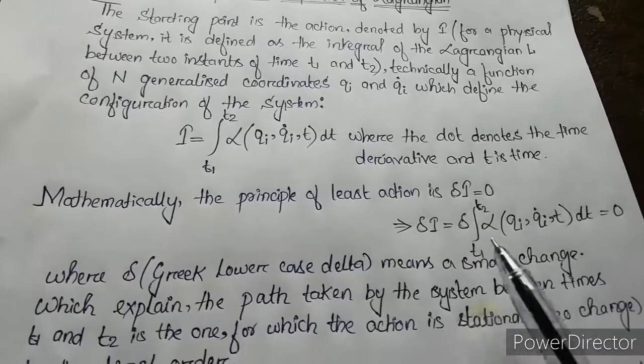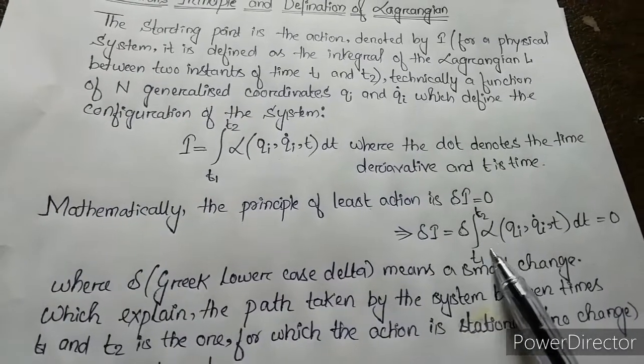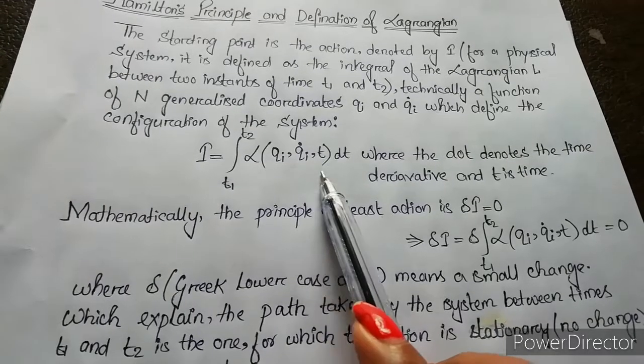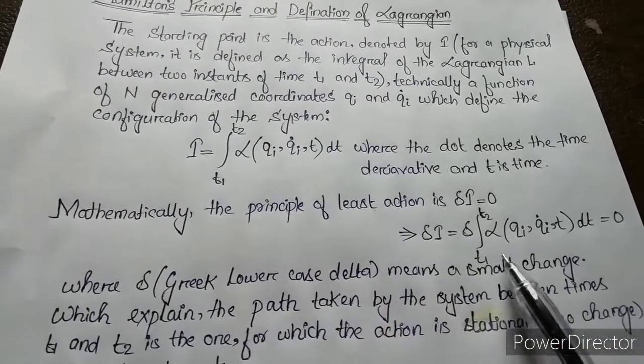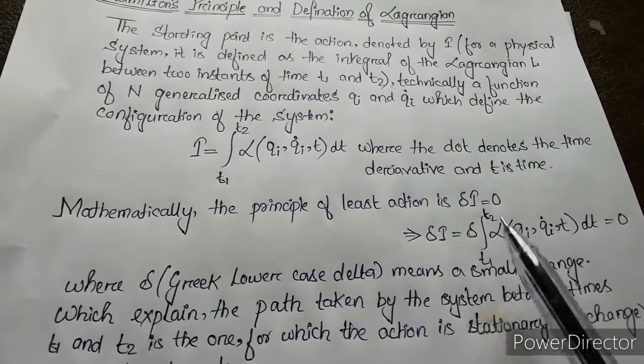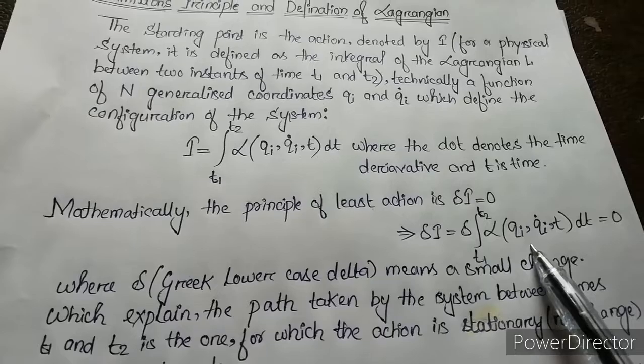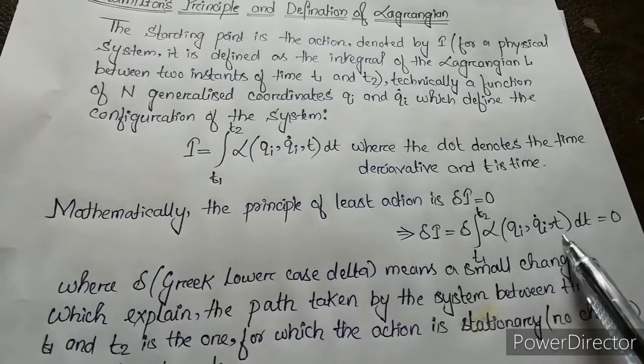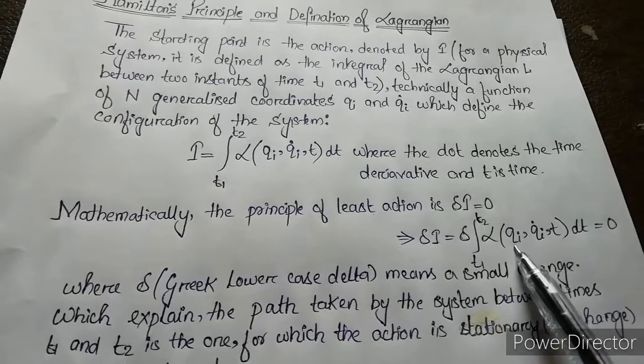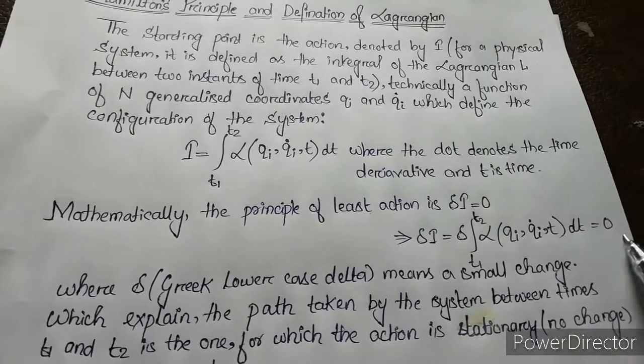Here, delta is a Greek lowercase delta. We substitute the value of I from the previous equation, and we get delta I equals delta integration from t1 to t2 of L(qi, qi dot, t) dt equals zero.